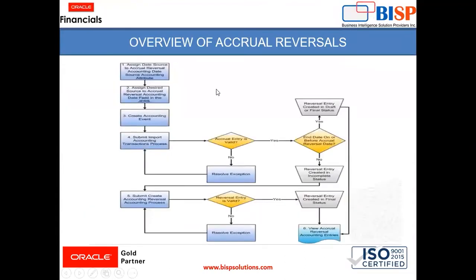Here is the flow diagram showing the flow of accrual reversal. It starts with assigning a data source to the accrual reversal accounting date source accounting attribute. Then assign the desired source to the accrual reversal accounting data field in journal entry rule sets. As we have already seen in our previous session, the journal entry rule set is where we assign description rules, account rules, quoting references, defined formulas, and journal line rules. These are all combined into journal entry rule sets — that is what JERS stands for.